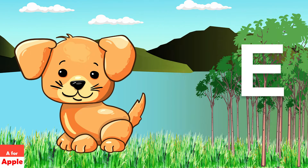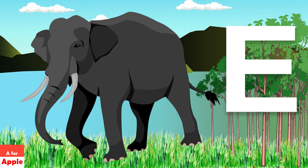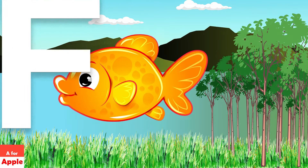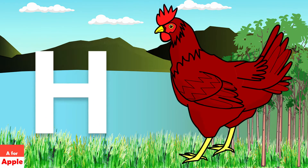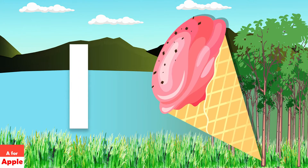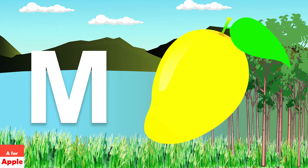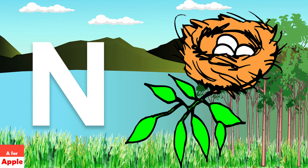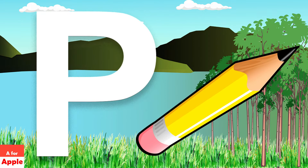A for apple. B for ball. C for car. D for dog. E for elephant. F for fish. G for goat. H for hen.